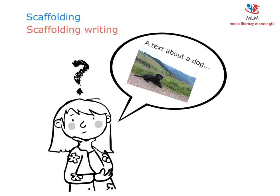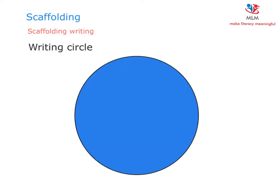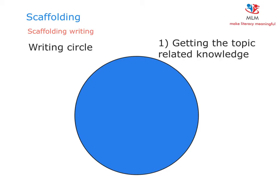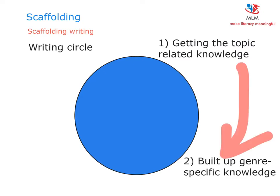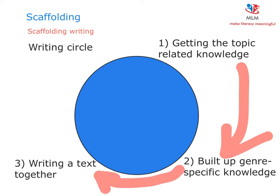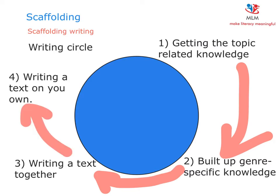The scaffolding writing circle consists of four different steps. I will go into more detail with each step, but first I want to give you a brief overview. The first step is to get the topic-related knowledge. The next step is to build up genre-specific knowledge. The third step is to write a text together. Only at the very end, at the fourth step, are students asked to write a text on their own.